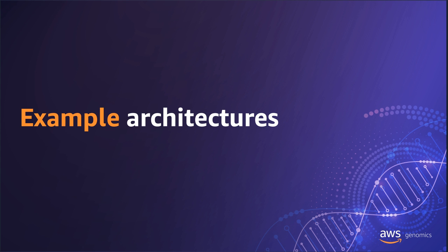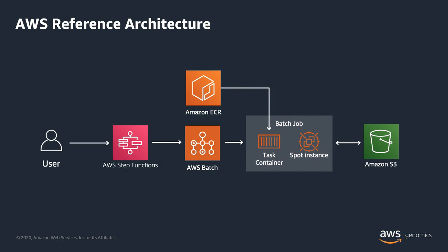So what do sample architectures look like? Here is an AWS reference architecture using AWS native services. It uses AWS Step Functions as the workflow orchestrator, AWS Batch for job execution, and Amazon S3 for data storage. Importantly, this architecture is entirely serverless — compute scales up as needed when running workflows and completely scales down when the workflow is complete, with no permanently running servers to manage.